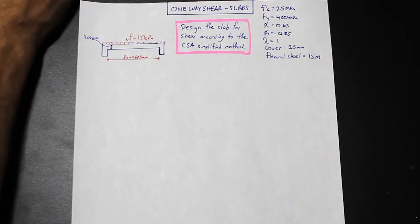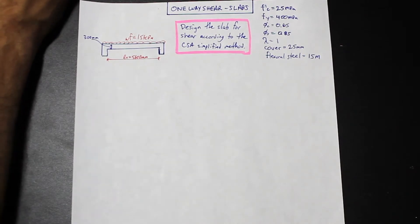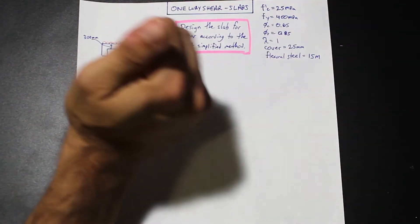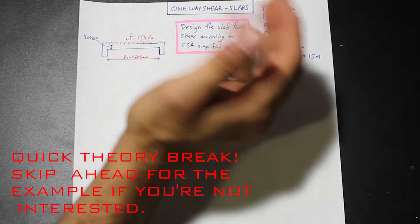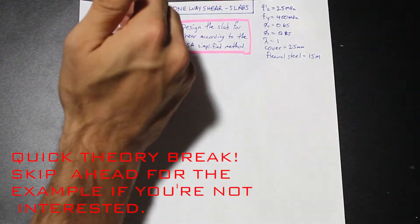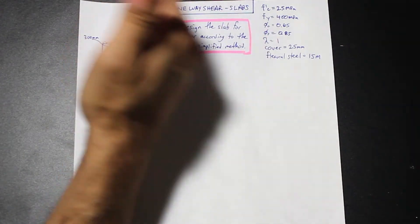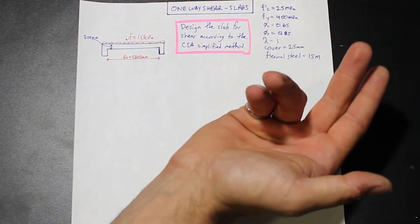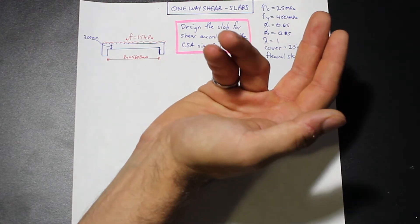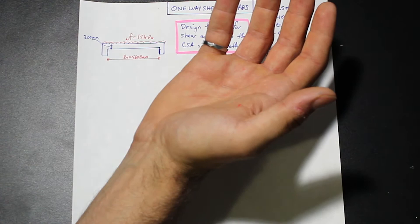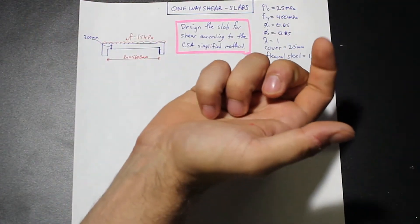Hey guys, welcome back. Fred here from AF Math & Engineering. In this video, we're going to cover one-way shear, and we're just going to cover slabs. We're asked to design the slab for shear according to the CSA simplified method. We're given a bunch of parameters here with a loading and a simply supported slab. We're going to check the slab's capacity to handle this load in shear per meter.